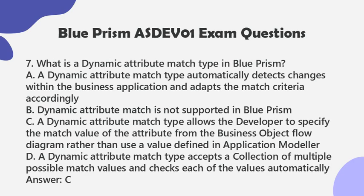Question 7: What is a dynamic attribute match type in Blue Prism? a. A dynamic attribute match type automatically detects changes within the business application and adapts the match criteria accordingly. b. Dynamic attribute match is not supported in Blue Prism. c. A dynamic attribute match type allows the developer to specify the match value of the attribute from the business object flow diagram rather than use a value defined in application modeler. d. A dynamic attribute match type accepts a collection of multiple possible match values and checks each of the values automatically. Answer: C.